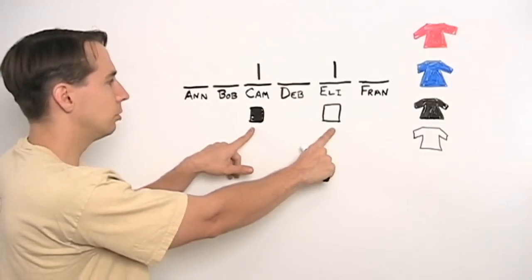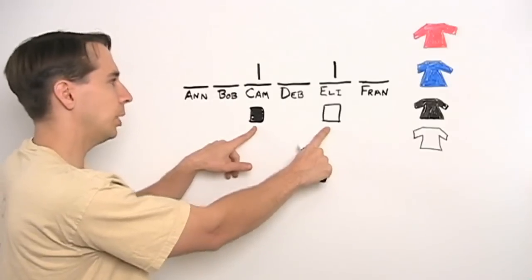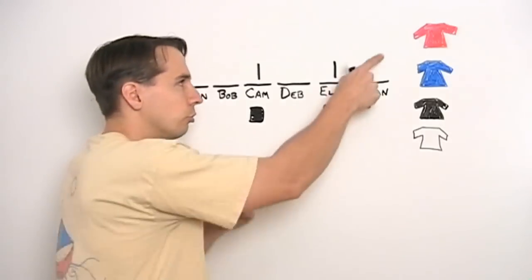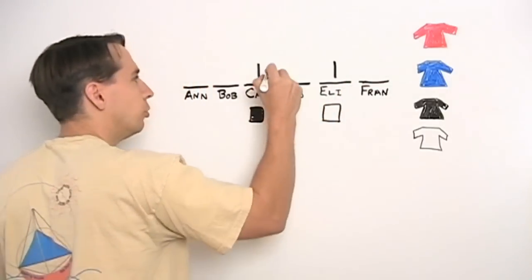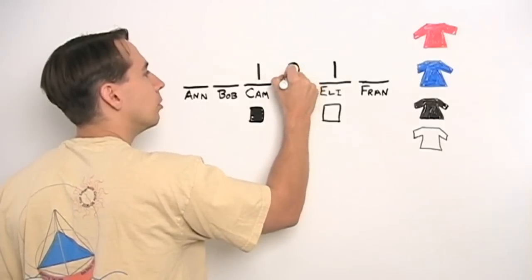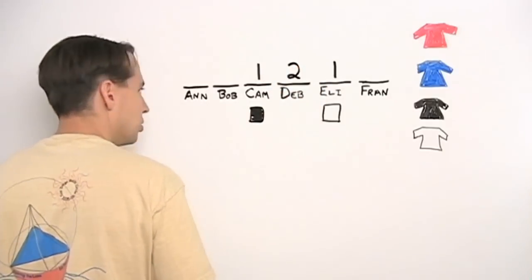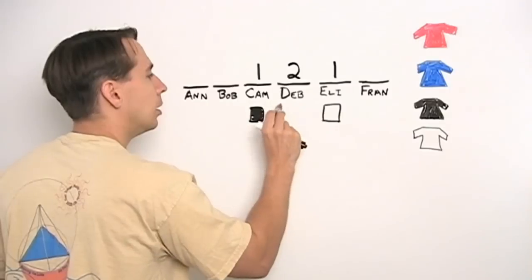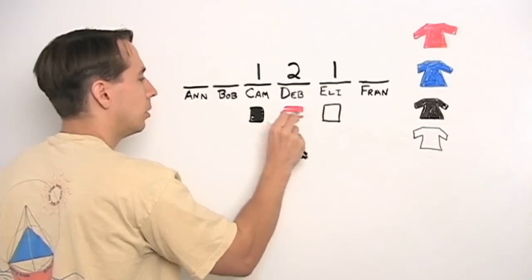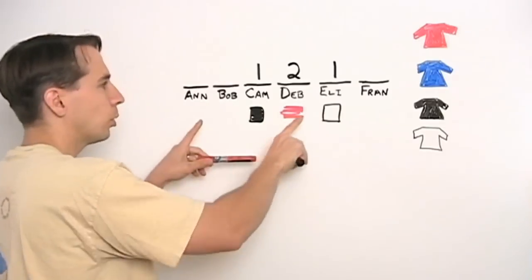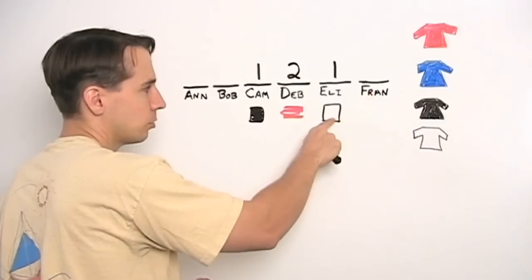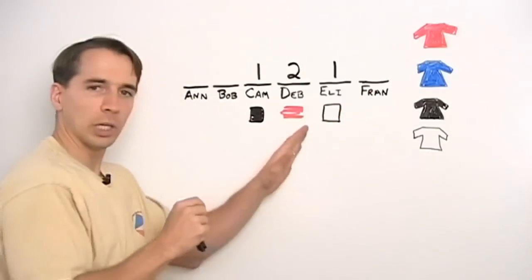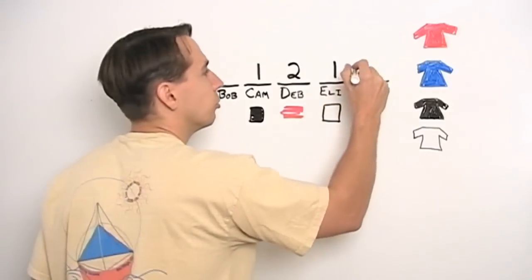Well, Deb here in the middle is the most restricted. She can't pick black, she can't pick white. So she can only pick red or blue. So she only has two choices. Now, let's say she chooses red. And then working our way out, we see that Fran's restricted, only can't choose white. It's the only thing she can't choose, so she has three choices. Say she chooses black.